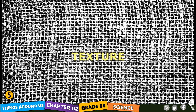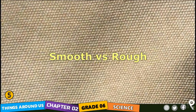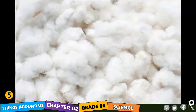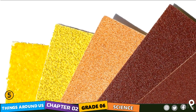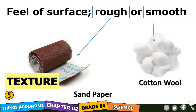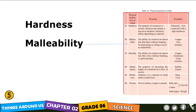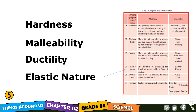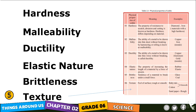Finally, texture. When you touch certain things you feel smooth, and some you feel rough. Take cotton — it is very smooth. What about sandpaper? It is rough. The feel of a surface — rough or smooth — is known as texture. So we have now covered hardness, malleability, ductility, elastic nature, brittleness, and texture.